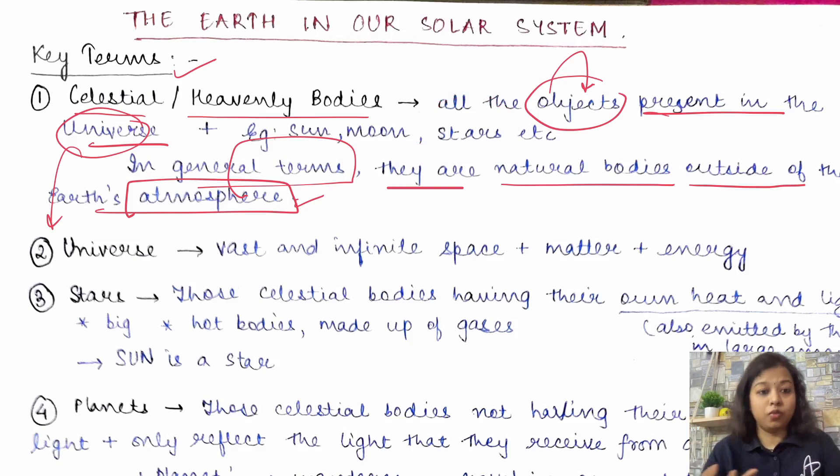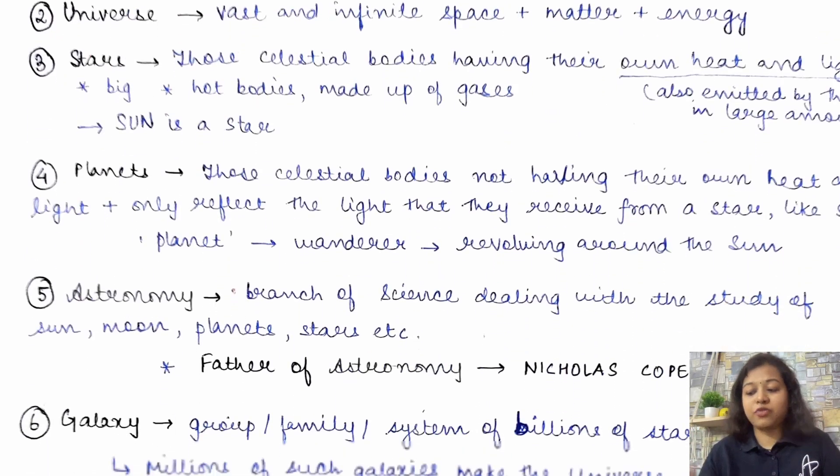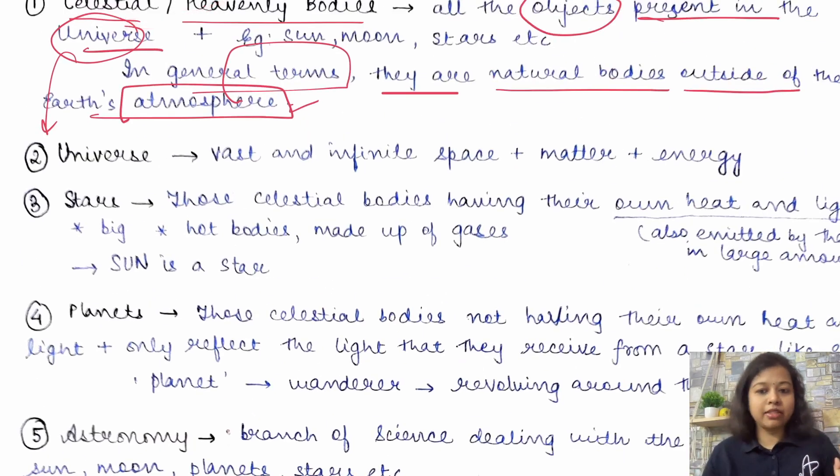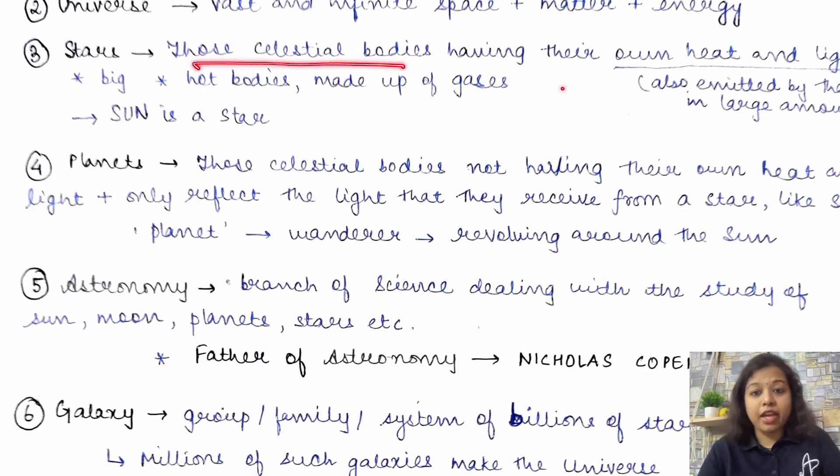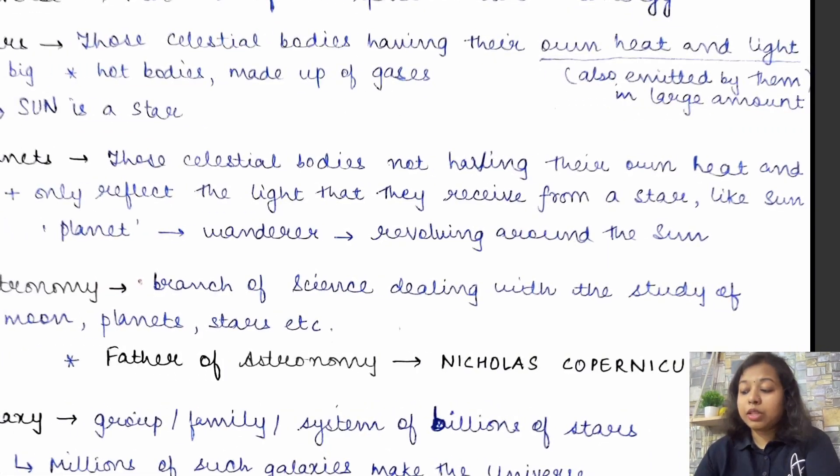Now, we have seen some examples. There are sun, moon, stars. What are these things? Let's start with the stars first of all. So, stars are those celestial bodies. Now, we know that it is one of the example of the celestial body because it is present in the universe. So, stars are those celestial bodies which have their, see, this is the main characteristic feature of a star which also differentiate it from the term planet. So, stars kya ho jayenge? Which have their own heat and light. Here you can see. And now, these heat and light are also emitted by these stars in larger amount.